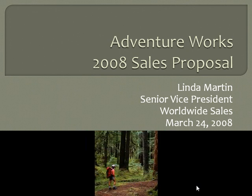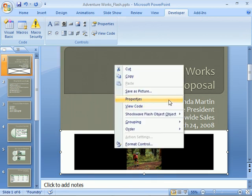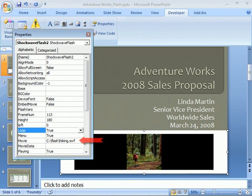Let's press the Escape key for one last tip. If you ever change the SWF file's location on your system, or transfer the presentation to another system, you'll need to transfer the SWF file as well and update the drive path in the ActiveX Object's Properties window. You can do that either through the Developer tab or just right-click the object and select Properties. If you don't update the path, the file won't play.